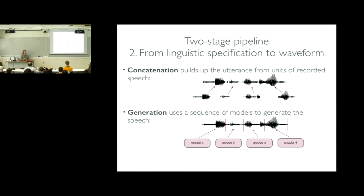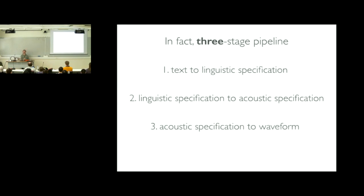This two-stage pipeline is already looking a bit dubious. Let's call it a three-stage pipeline. We go to a linguistic specification — classical text processing, pronunciations, where phrases fall — then optionally or explicitly we get from that linguistic structure to something that's a specification of the acoustics: what it's going to sound like. That might be the input to a vocoder — spectral envelope and F0, some acoustic specification — and then from there we actually generate the waveform.